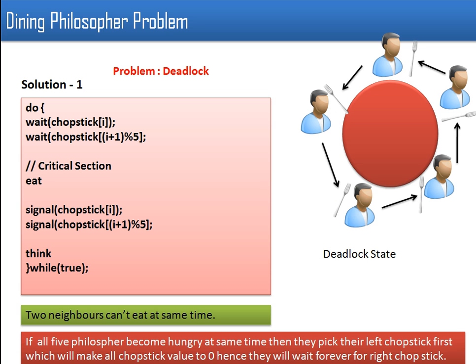This is the first problem with solution number one: there will be a deadlock if all philosophers want to eat at the same time. If we have five processes and a limited number of resources and we go for this solution, there will be a deadlock.